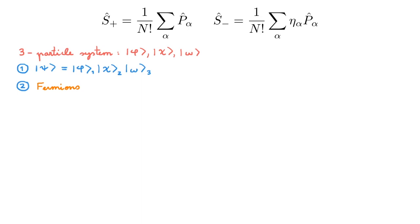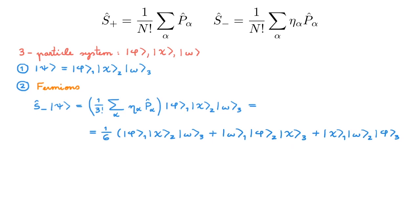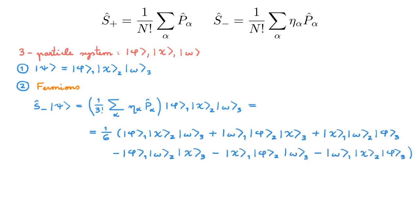What about fermions? In step 2 we apply the antisymmetrizer on Psi. Expanding it gives six terms very similar to the bosonic case: the first three are the same — phi chi omega, omega phi chi, chi omega phi — but the last three terms have a negative sign: minus phi omega chi, minus chi phi omega, and minus omega chi phi. This negative sign arises because those terms correspond to odd permutations. For fermions, if any two of phi, chi, or omega are equal then this expression is zero — the Pauli exclusion principle — and the normalization is always the same: replace the prefactor by 1 over the square root to obtain a normalized state.